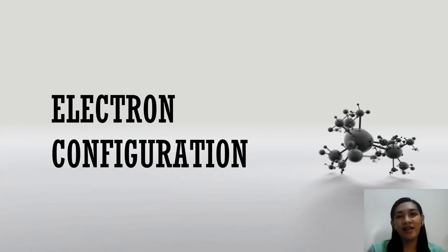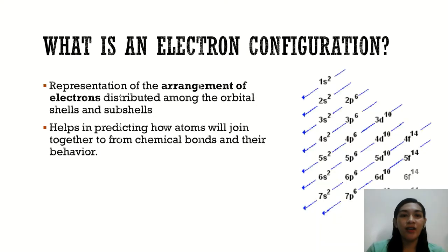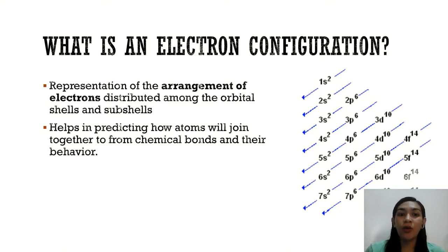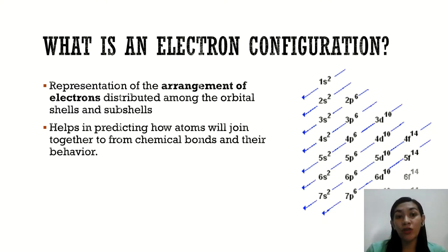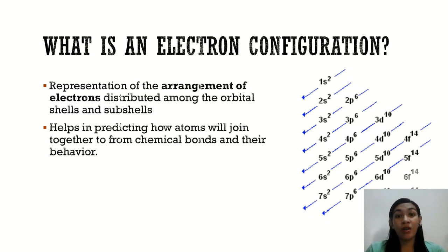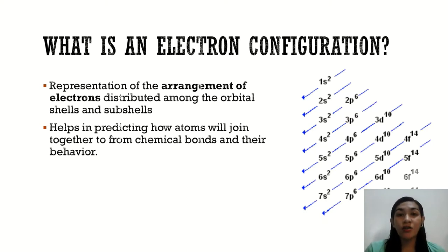For this video, we will be discussing what an electron configuration is. An electron configuration is a representation of the arrangement of electrons distributed among the orbital shells and subshells. We need to know the electron configuration because it helps us in predicting how atoms will join together or how they would be forming bonds with other elements or with other atoms. We need this to further understand chemical bonding, which we will be discussing in another video.